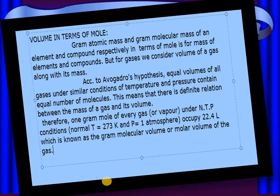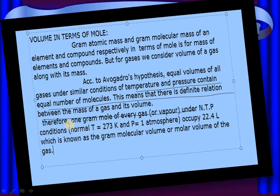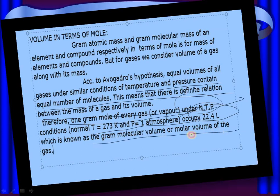Now we will relate volume in terms of moles. Volume is related to Avogadro's hypothesis and the law of combining volumes, because Dalton's work didn't clarify the relationship between mass and volume. Avogadro's hypothesis states: equal volumes of all gases under similar conditions of temperature and pressure contain equal number of molecules. This means there is a relation between the mass of a gas and its volume. Using this, one gram mole of every gas at NTP (273 K and 1 atm) occupies 22.4 litres, known as gram molecular volume or molar volume.